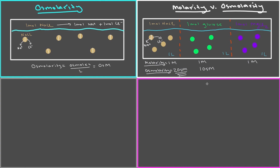Magnesium chloride is an ionic compound, and when put into solution it breaks up into three different ions: magnesium and two chloride ions. So if we start with one mole of magnesium chloride, we end up with three osmoles worth of particles — three times as many as we started with. Three osmoles in one liter gives an osmolarity of three.